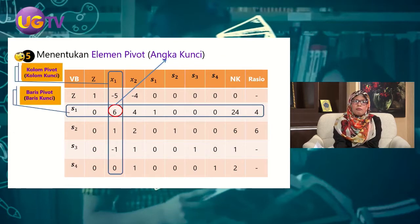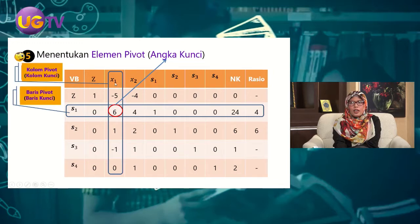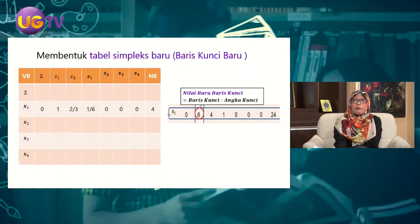Langkah kelima adalah menentukan elemen pivot atau angka kunci, yaitu elemen pada perpotongan kolom kunci dan baris kunci, sehingga angka kuncinya adalah 6. Di sini X1 akan menjadi entering variable, sedangkan S1 menjadi leaving variable. Langkah keenam adalah membentuk tabel simplex yang baru, di mana variabel basis berubah menjadi Z, X1, S2, S3, dan S4, sehingga S1 menghilang sebagai leaving variable dan X1 masuk sebagai entering variable.